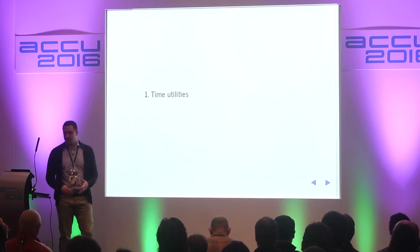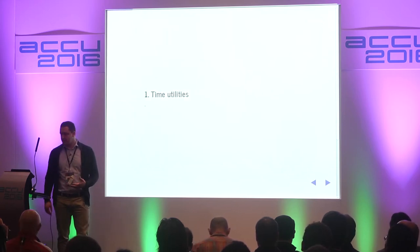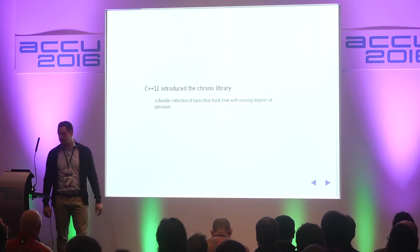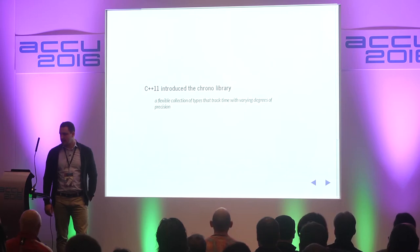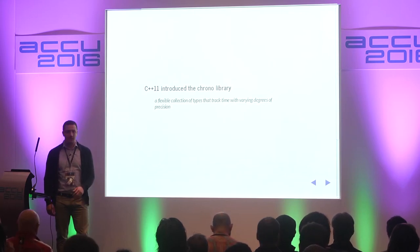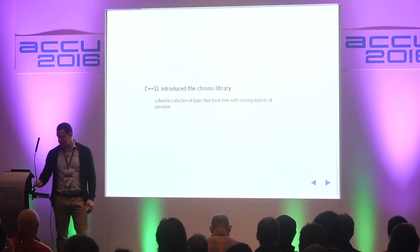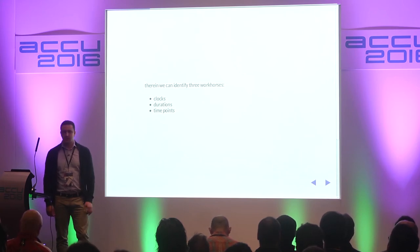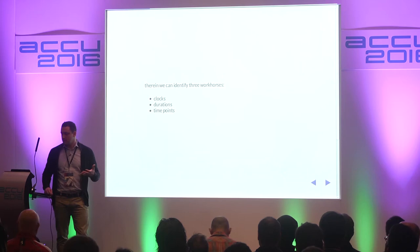We're going to be dealing with the time utilities provided by and introduced by std::chrono in C++11, which is a flexible collection of types that track time with varying degrees of precision. We can identify three workhorses for benchmarking in chrono: clocks, durations, and time points.